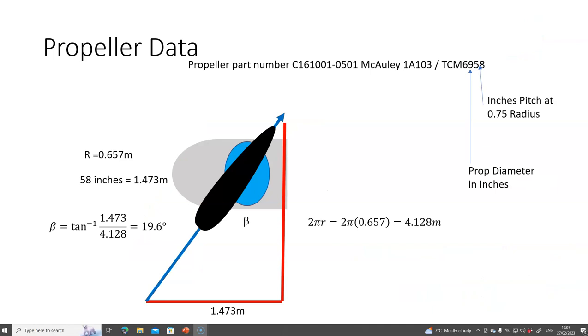When I looked up the propeller data sheet, the propeller was a McCauley 1A103 TCM 69-58. The 69 refers to the diameter in inches, and 58 refers to the pitch at the 75% radius. So 58 inches is 1.473 meters. This is telling me that when the propeller rotates one full revolution, it should go forward 1.473 meters.